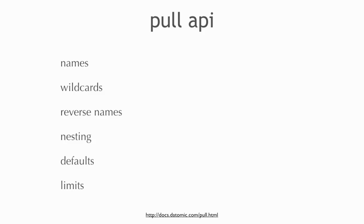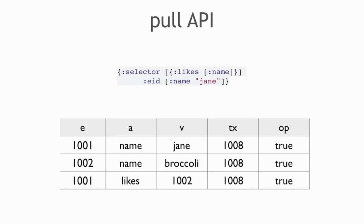The pull API allows you to name things you want to pull out. You can use wildcards to say you just want everything, reverse names to find things that relate to you, nesting to say go find this and then in the nested thing find that, and you can specify defaults and limits. Here we have the pull API applied against a tiny database. We have a selector that says: find for Jane the names of things that Jane likes — so we're already jumping to a nested selector in the first example.